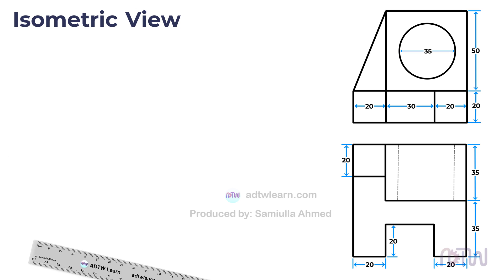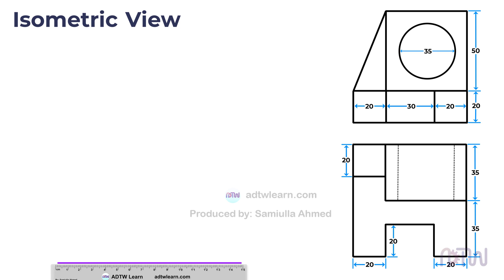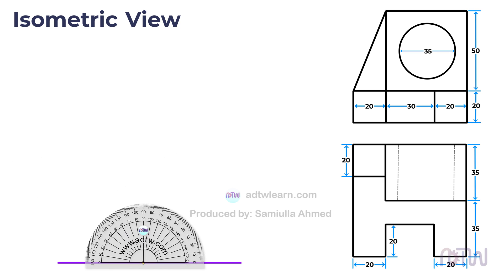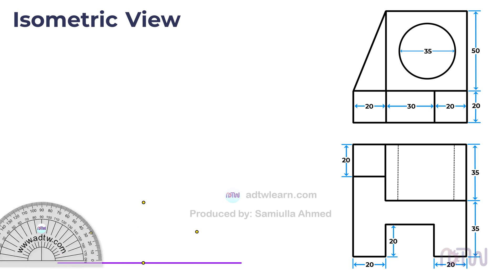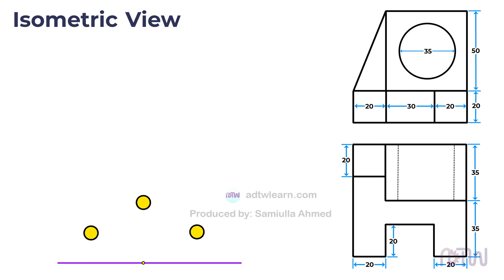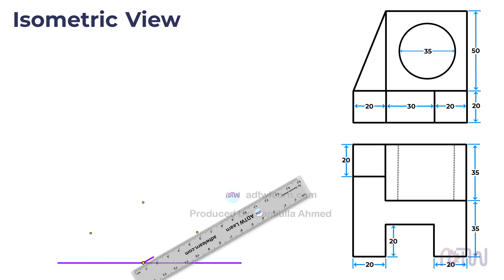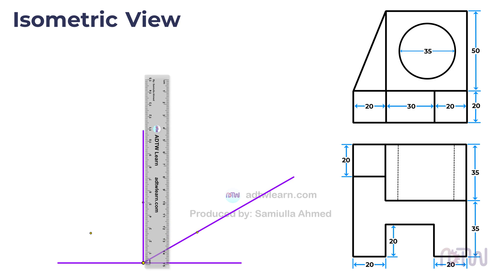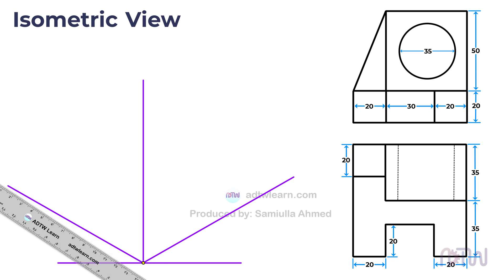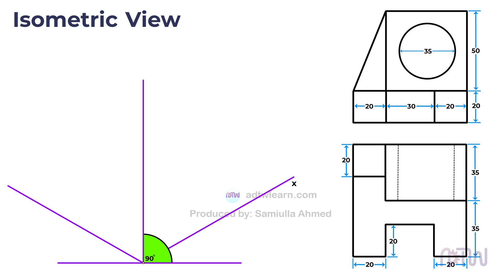Take a ruler and draw a horizontal line, then mark a center point on this line. Next, take a protractor and mark 30 degrees on both sides of the center point, as well as 90 degrees. Draw lines passing through these points from the center point. The line passing through the 30 degree mark will be the x-axis, the line through the 90 degree mark will be the y-axis, and the remaining line will be the z-axis.